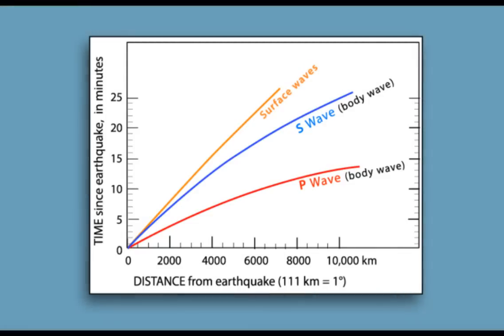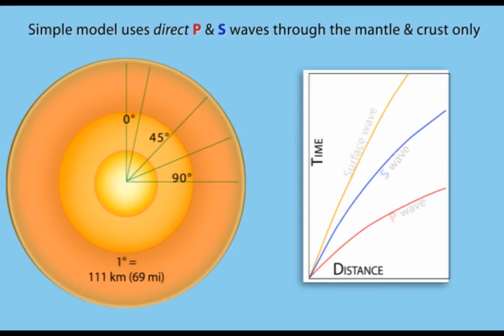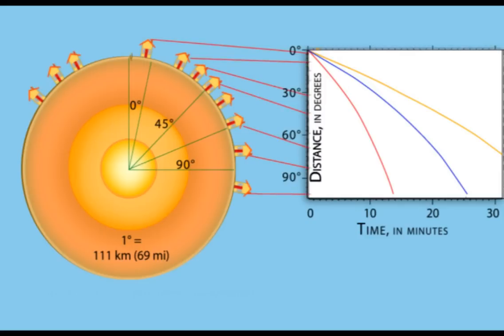To explain, we'll use a simple graph of P, S, and surface wave arrival times while exaggerating the relative motion as the waves hit the buildings, representing seismic stations.